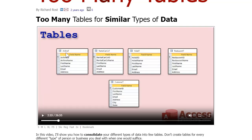Here's another example: I had one customer who had separate tables for airlines, rental car companies, hotels, and restaurants. What do they all have in common? They're all basically companies. So unless you've got lots of fields that are unique to a particular type — like special airline-specific stuff — generally it's all the same data. If you want to add one or two extra fields here and there, fine. But by and large, these are all the same type of thing — they're all companies. Put them in a company table and just have a combo box to differentiate: is this a restaurant? Is this a hotel?